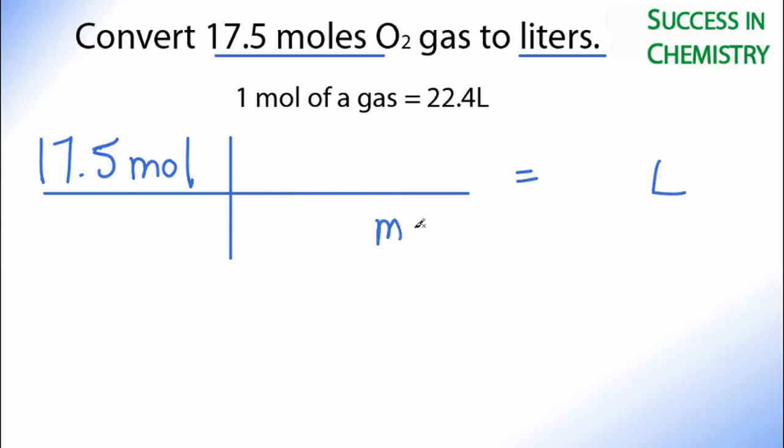I want to have moles on the bottom, so I can cancel these two terms out, and then liters on the top. So I know one mole is 22.4 liters. When I do the multiplication, moles are going to cancel out. 17.5 times 22.4 equals 392.0 liters.